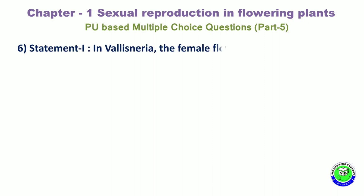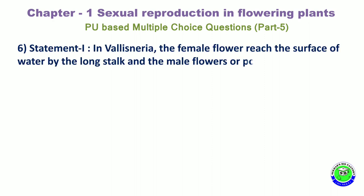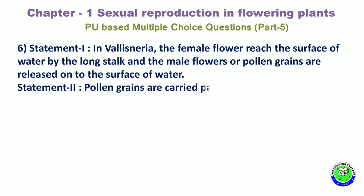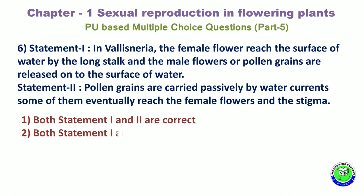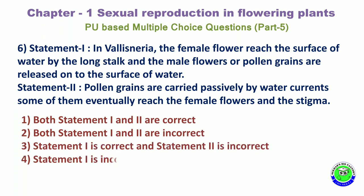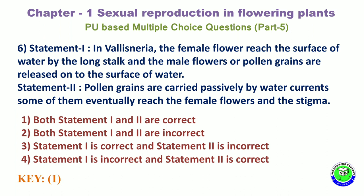Question 6. Statement 1: In Vallisneria, the female flower reaches the surface of water by a long stalk and male flowers or pollen grains are released onto the surface of water. Statement 2: Pollen grains are carried passively by water current; some of them eventually reach the female flower and the stigma. Option 1: Both statements correct. Option 2: Both incorrect. Option 3: Statement 1 correct, 2 incorrect. Option 4: Statement 1 incorrect, 2 correct. The correct answer is the 1st option.